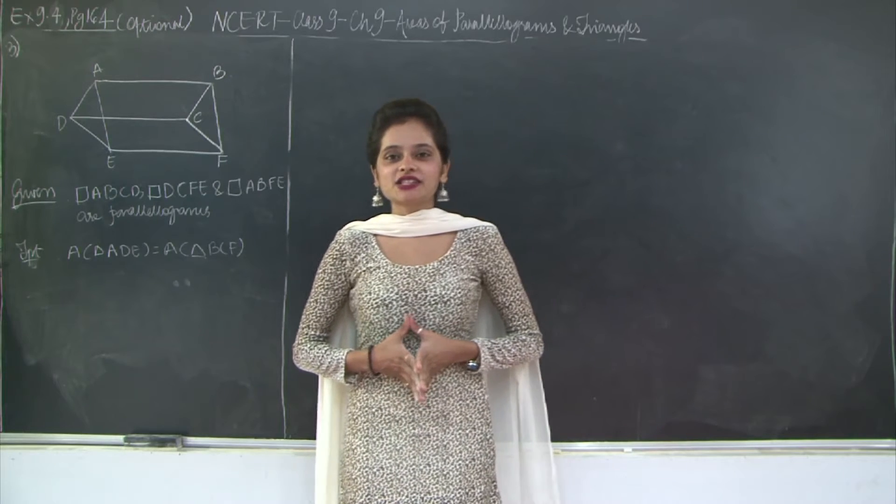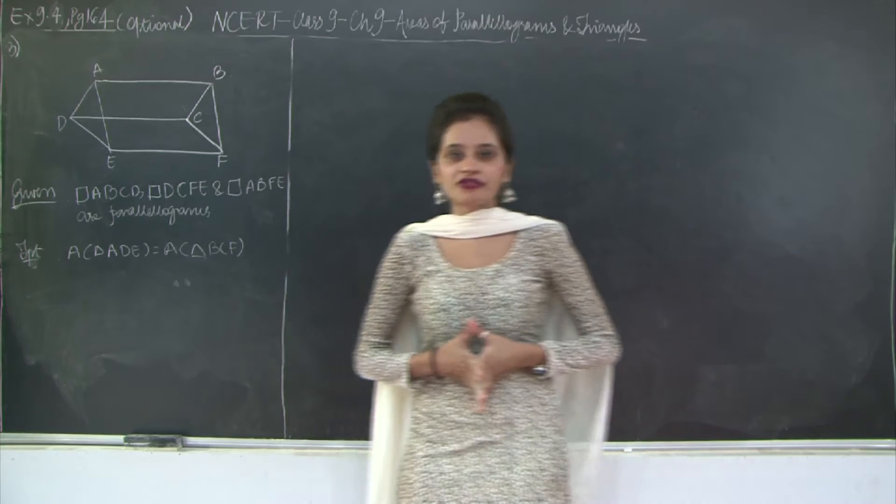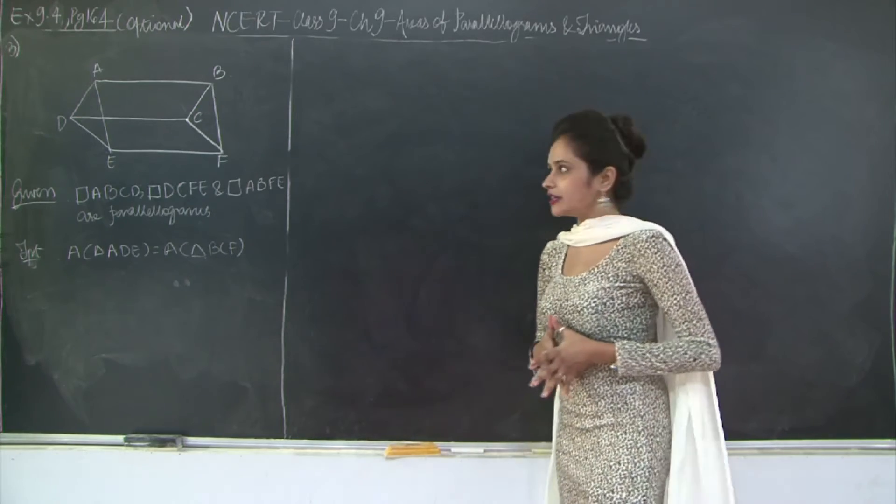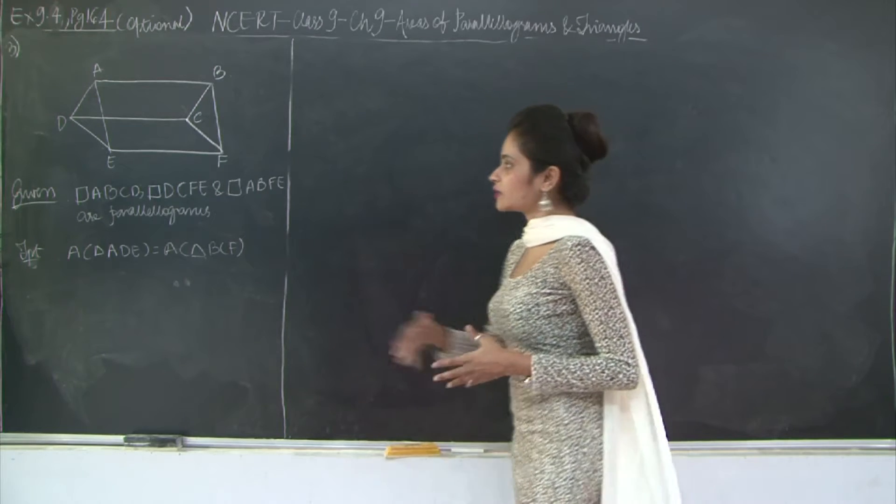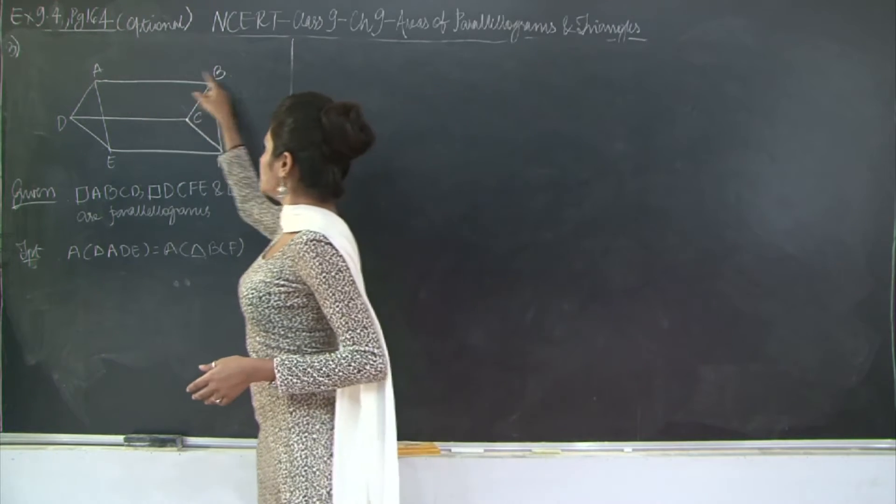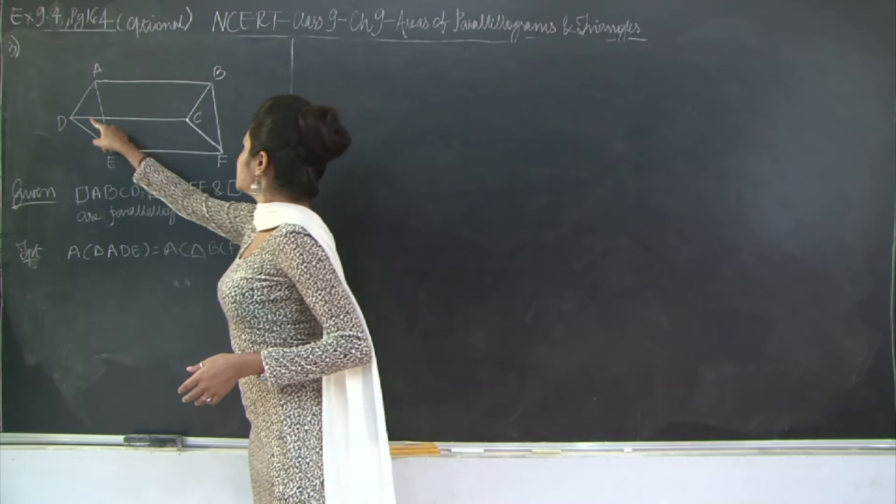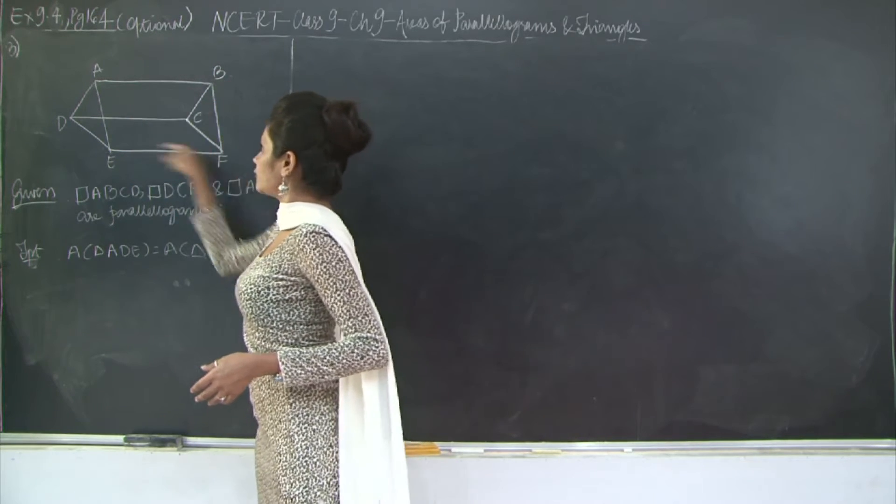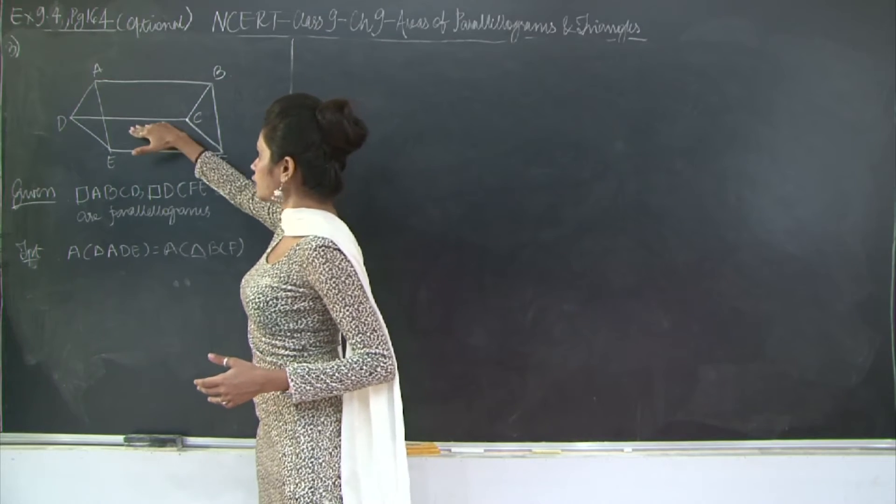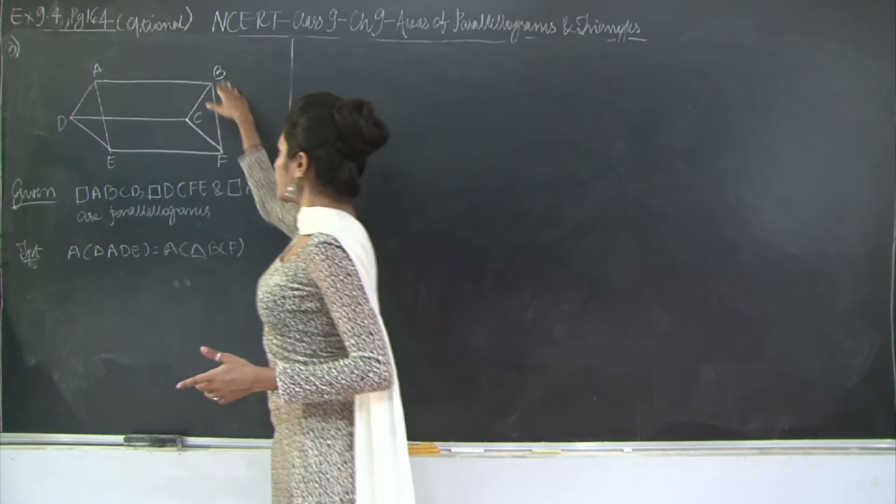Hello students, let us continue with exercise 9.4 of chapter 9, question number 3. In this given diagram, we have three parallelograms. If you can notice, you have parallelograms ABCD, DCFE, and ABFE. So two smaller parallelograms and the larger parallelogram ABFE.